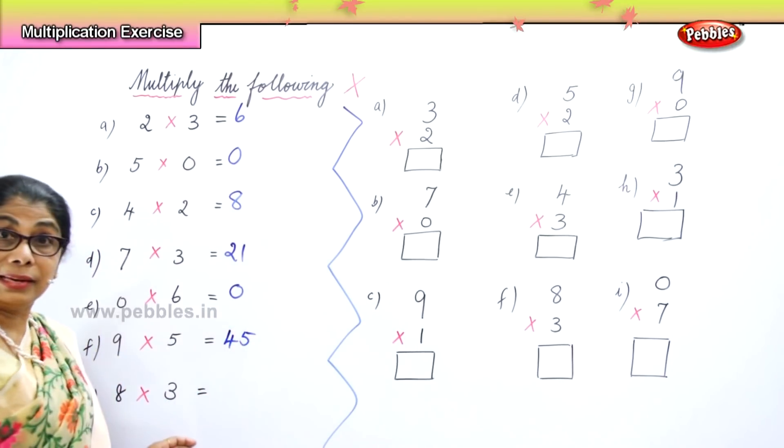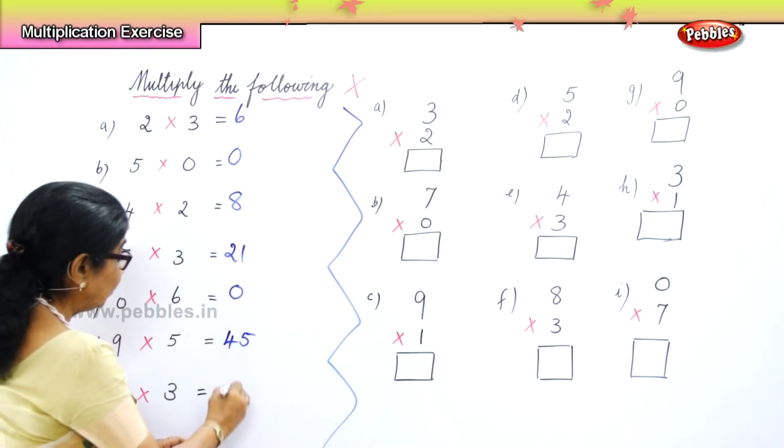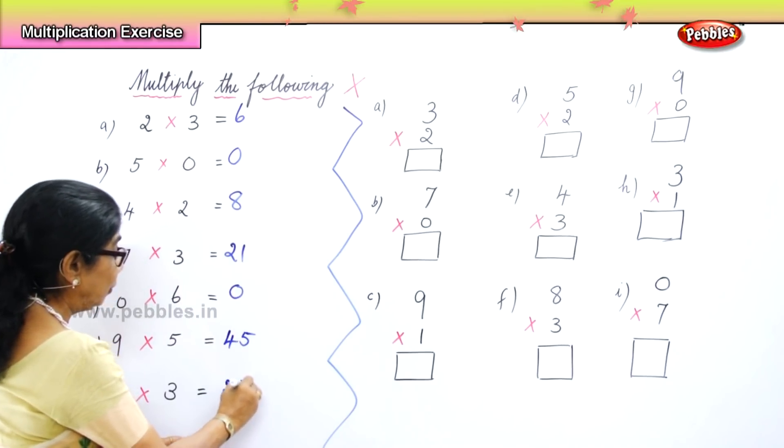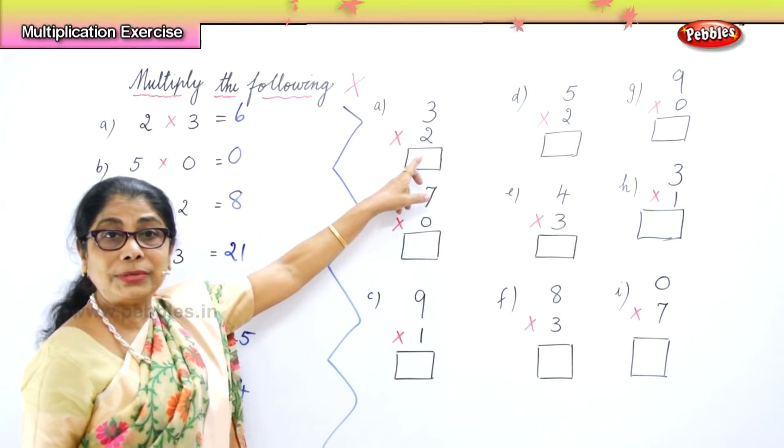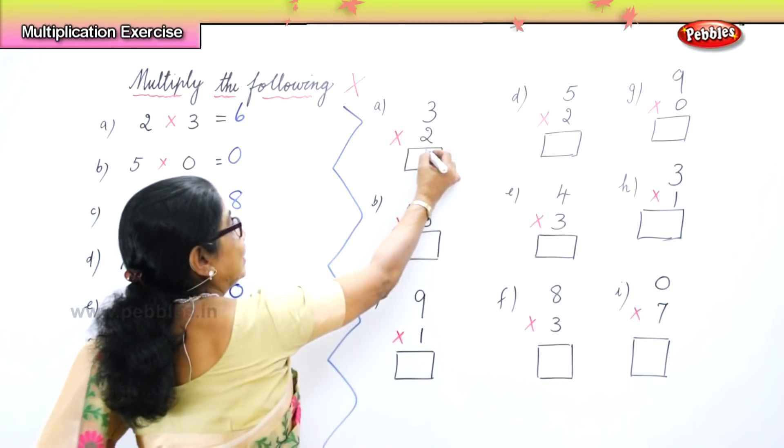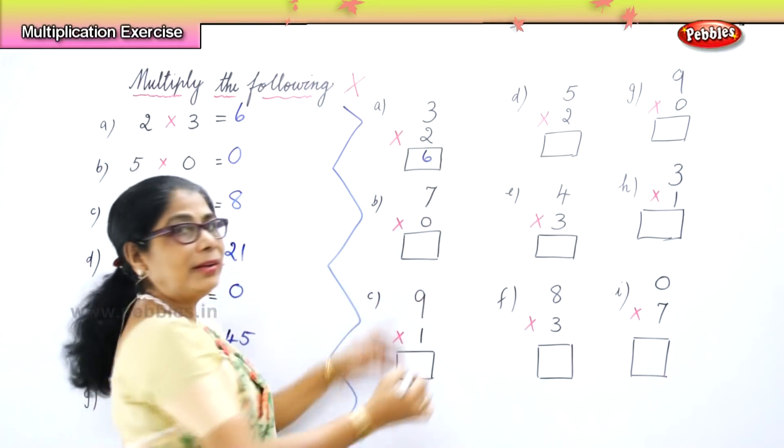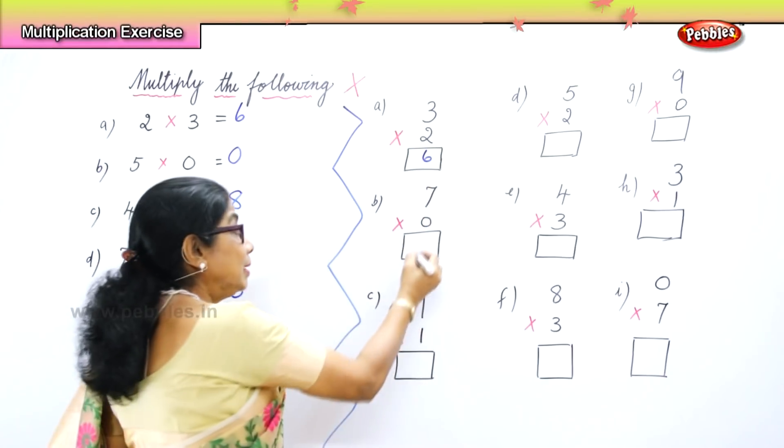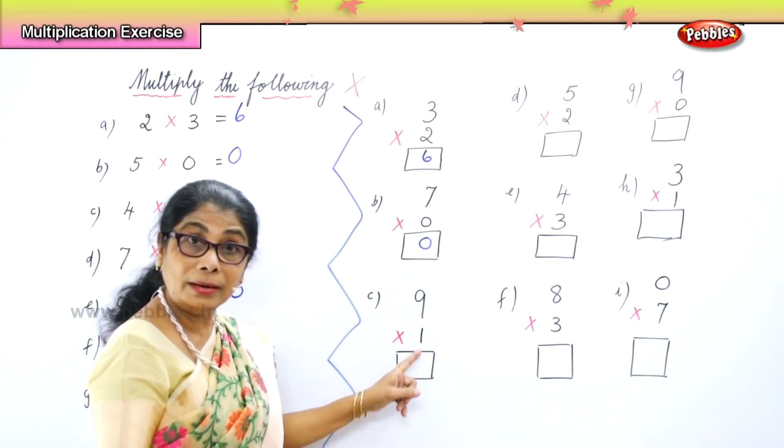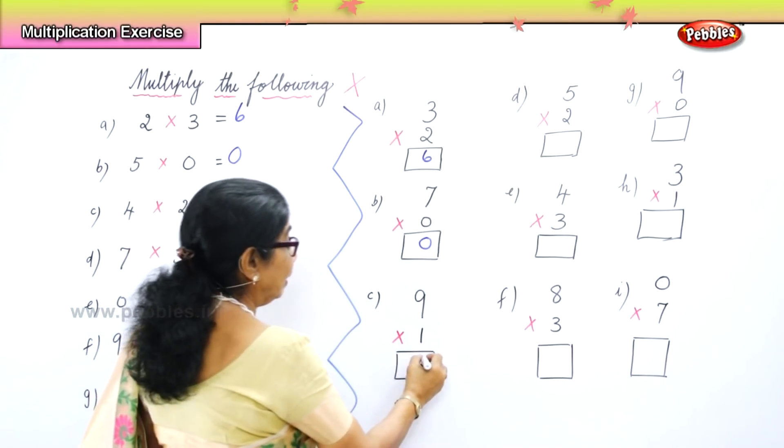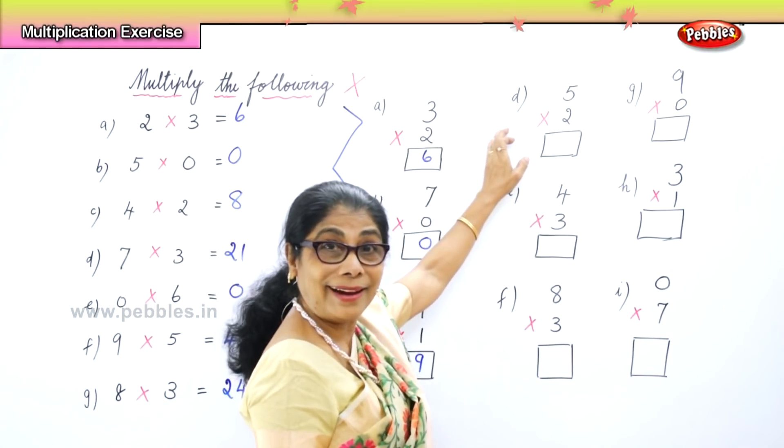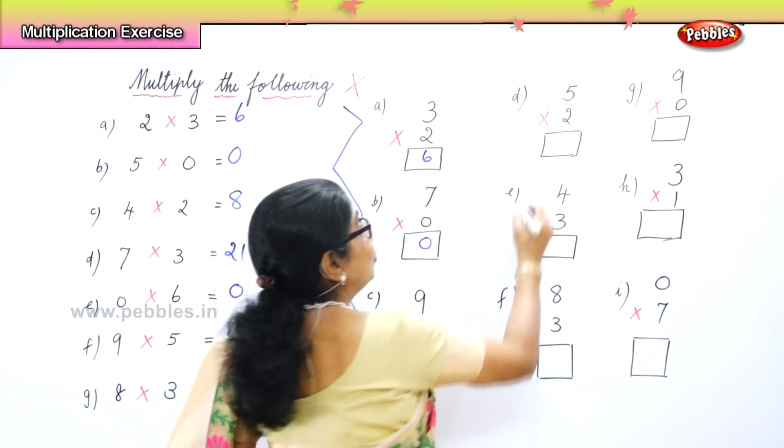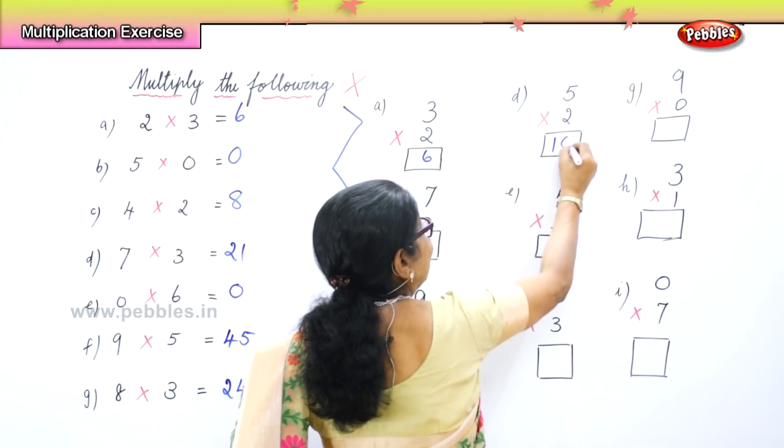Eight threes are, eight three times, twenty-four. Very good. Now, three two times, three twos are six. Seven into zero is zero. Nine into one is nine itself. Five twos are, five two times, ten. Very good.